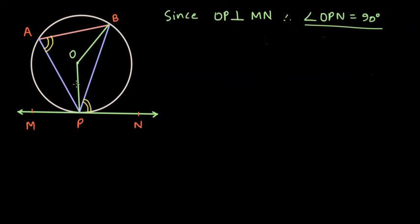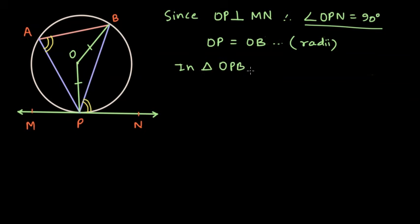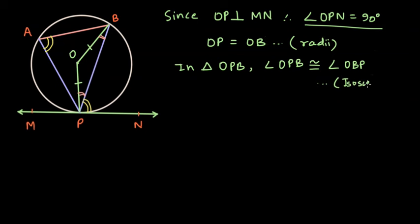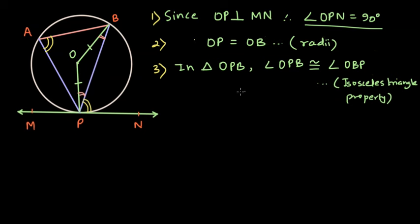This is a very important result we will use later. Since OP and OB are both radii, OP is equal to OB. In triangle OPB, since OP equals OB, by the isosceles triangle property, angle OPB is congruent with angle OBP. Let me give both of these angles the variable measure of x degrees, so we can use it later.